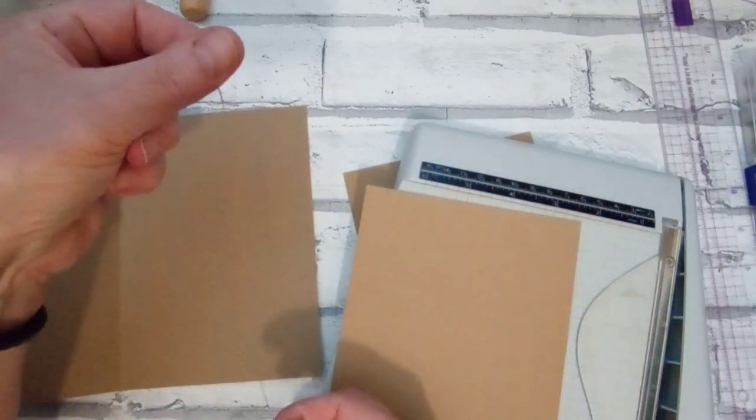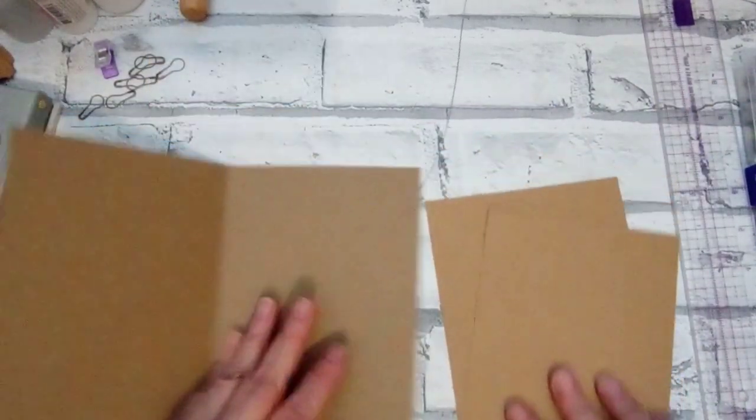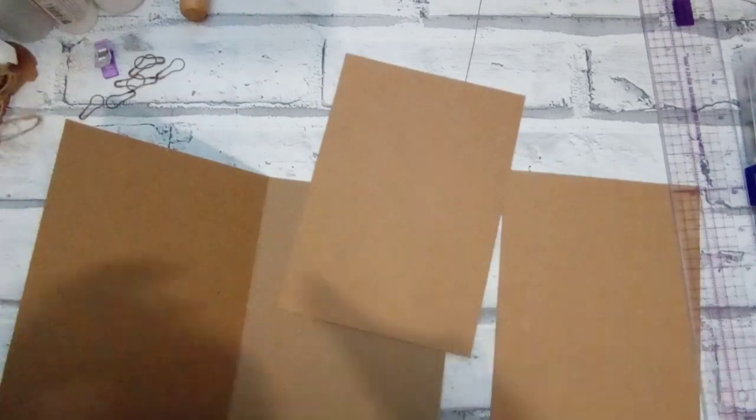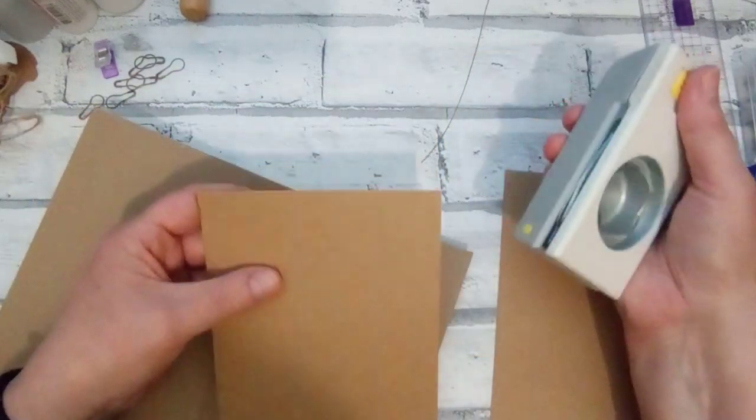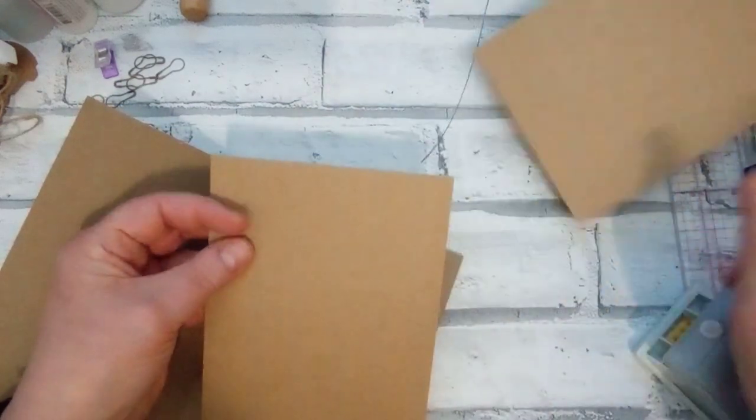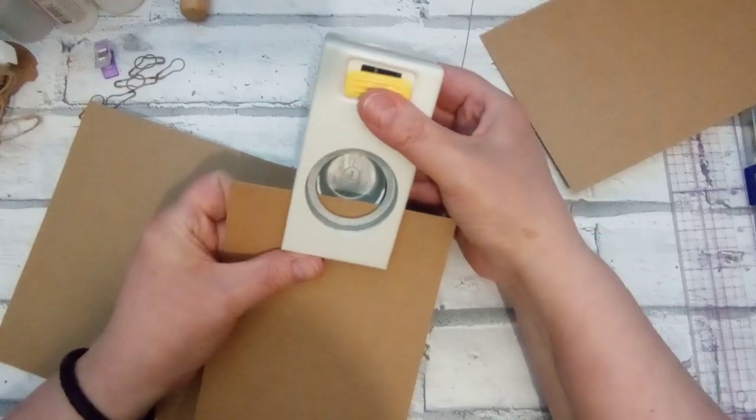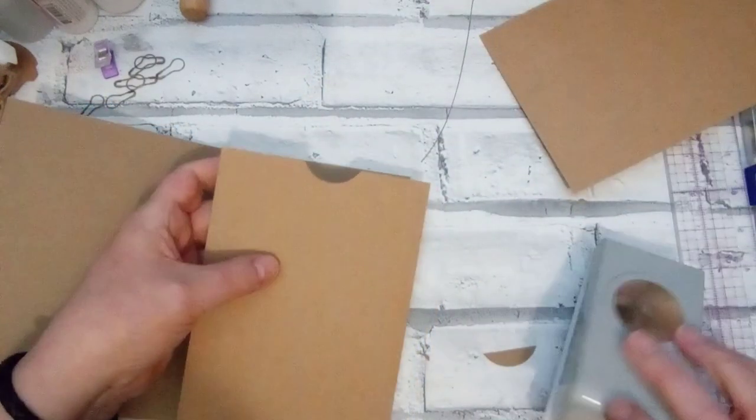Oh I love these Tim Holtz trimmers for letting you do stuff like that. Then the top, I'm going to grab my circle punch. This bit is optional. Don't have to do it. I'm just going to cut a semi-circle at the top. I'm using my one and a half inch punch.